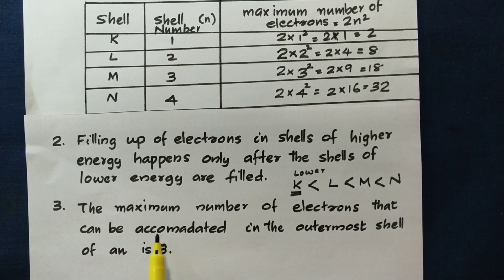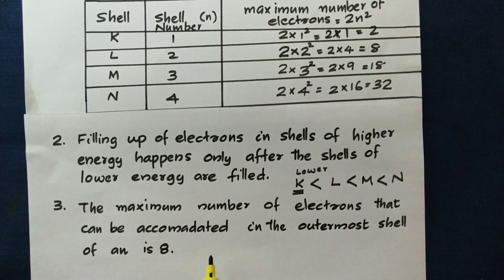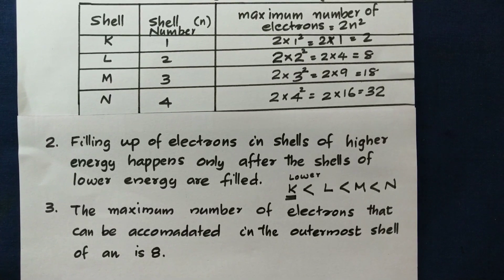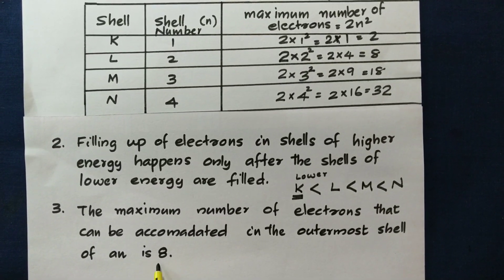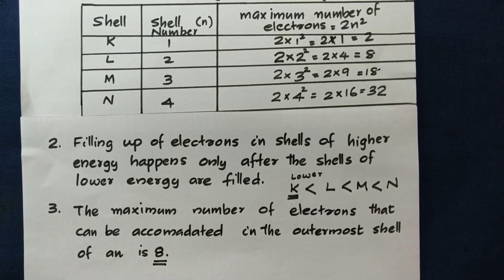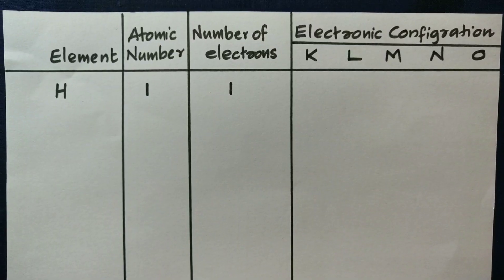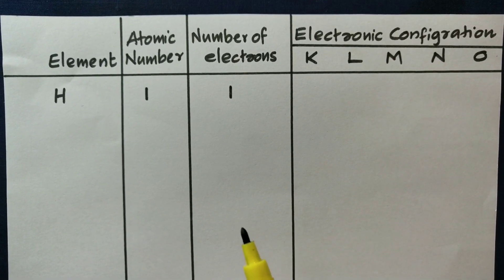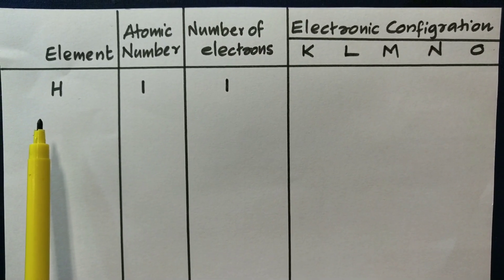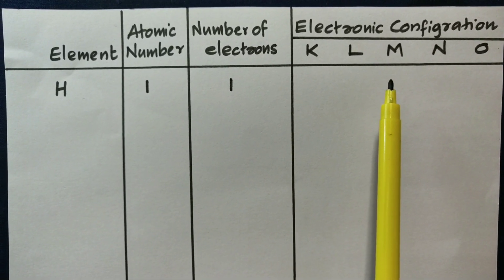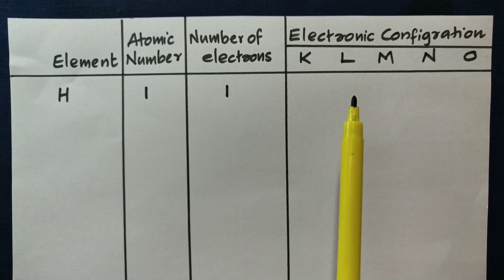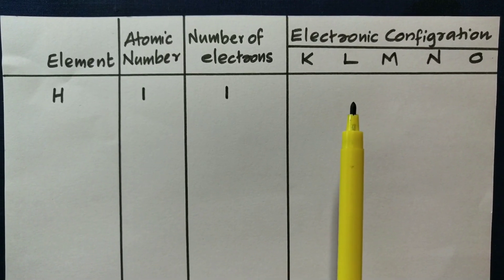The maximum number of electrons that can be accommodated in the outer shell is 8. Let's take a look at this in 3 dimensions.